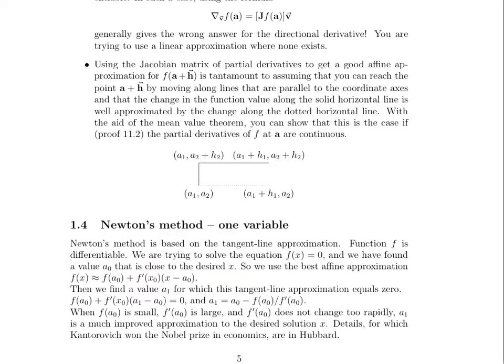So when those factors have come to pass, then the point that is actually the 0 for the tangent line ends up being a much improved approximation to our desired solution x. And so this actually was some of the material that won the Nobel Prize in economics, and some of the details you can find in our textbook Hubbard. Let's take a closer look.